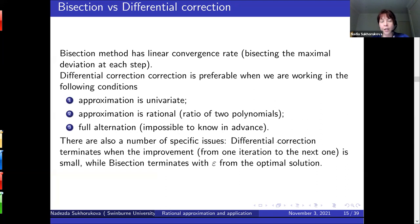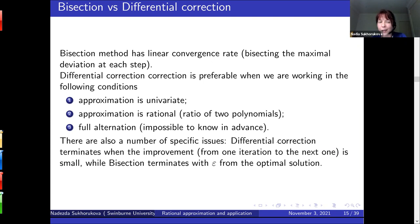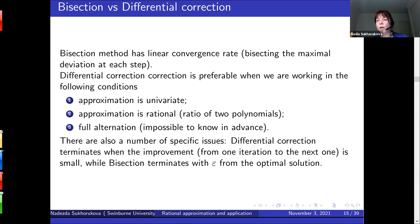Comparing bisection and differential correction: differential correction has quadratic convergence, but only when several assumptions hold — univariate functions, monomial basis functions, and full alternation, which I wouldn't know in advance. So differential correction is better than bisection when all these conditions are satisfied, but that's not always the case. A clear advantage of bisection is that I always know how far I am from the optimal solution, whereas with differential correction I stop when improvement is not significant and may still be far from optimal.